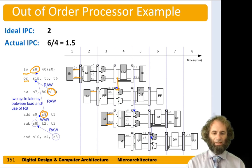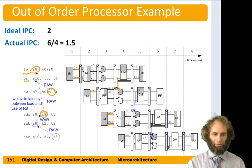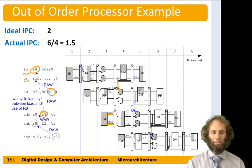We'd like to also issue the add, but it depends on s8 which wasn't ready yet from the load, so we can't issue the add at the same time as the store. Instead, we issue the add and subtract in cycle three, and then the AND — which depends on the subtract — is issued in cycle four. We've now issued six instructions in four cycles for an IPC of 1.5, which is better but still not ideal.